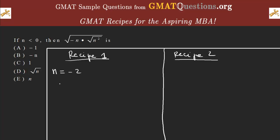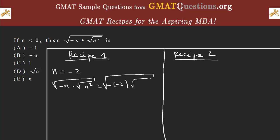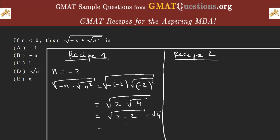So what does that mean? We're replacing n with negative two. We have a minus sign first, then negative two for n, and then the absolute value of negative two for n squared. Negative times negative gives us positive two, and negative two squared is four. So we get root of two times root of four. Root of four is two, and two times two gives us root of four, which equals two.